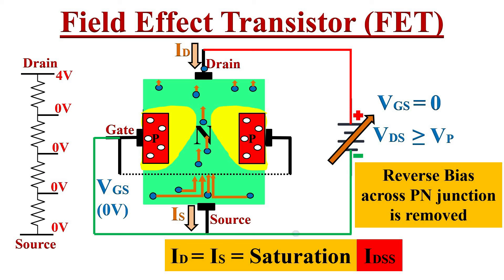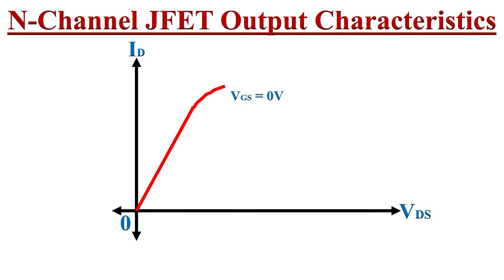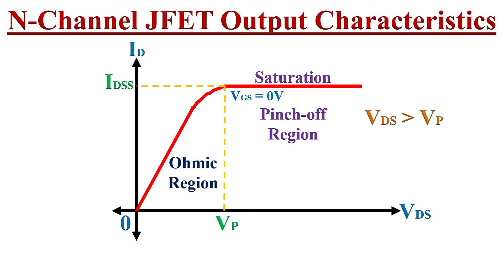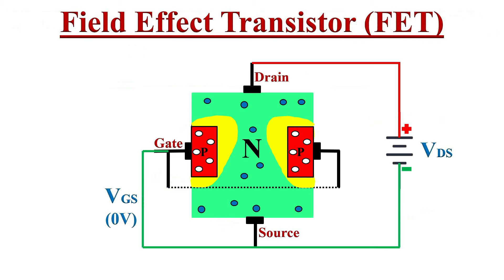This saturation current ID is denoted as IDSS. IDSS is the maximum current of the JFET whenever VGS equals zero and VDS is more than pinch-off voltage. Whenever VDS is more than pinch-off voltage, the current flowing through the JFET is almost constant and the JFET works as a constant current source. This saturation region of JFET is also called the pinch-off region, and the linear region is called the ohmic region of JFET.